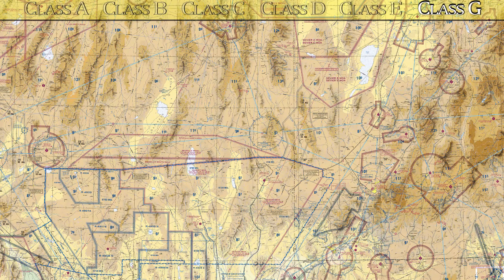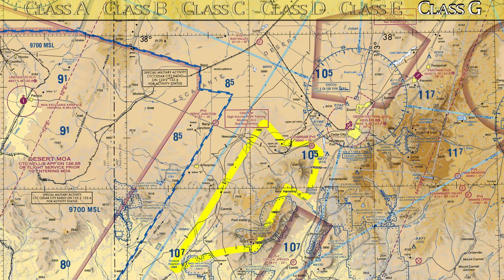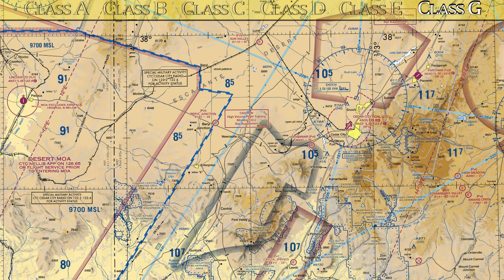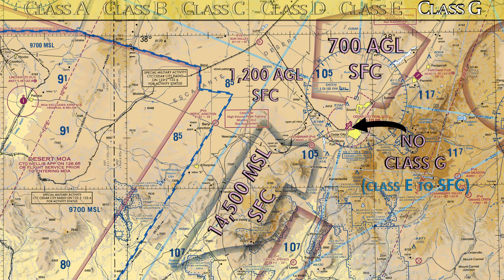The last thing to cover is what I call Special G — class G that doesn't fit the normal pattern. Navigate to Cedar County Regional Airport on the sectional. You'll notice a faded blue line: on the hard side of that blue line, class G airspace goes from the surface up to 14,500 feet MSL — note that's MSL, not AGL. On the softer side of the blue line, class G goes surface to 1,200 feet AGL. Around Cedar County Regional there's a dashed magenta line, meaning class E goes to the surface and there is no class G there.